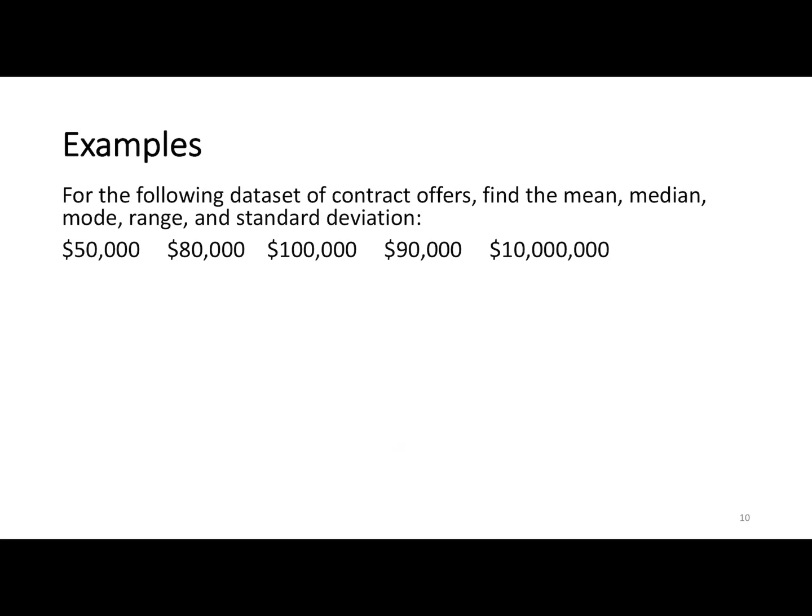This next data set: contract sizes - $50,000, $80,000, $100,000, $90,000, $10,000,000. We've got five numbers. Ten million is an outlier because it's extremely high, so it's going to throw off the mean. The median is not really impacted, there is no mode. Notice your arithmetic mean is $2 million, so that outlier is impacting all the other values - that's not a good representation of the data set.